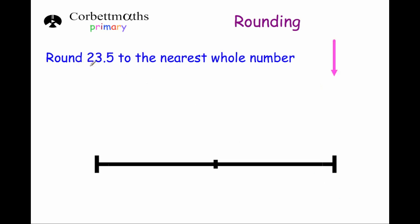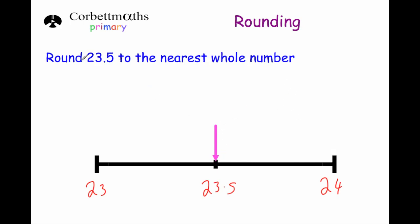Our next question asks us to round 23.5 to the nearest whole number. The whole number below is 23, above is 24, and 23.5 is exactly in the middle. Now, 23.5 is not closer to either number, but the rule is: whenever you're asked to round a number that's exactly in the middle, you round up. So even though it's not necessarily closer to 24, that's the rule — round up. So our answer is 24. Similarly, 7.5 would round to 8, and 9.5 would round to 10.